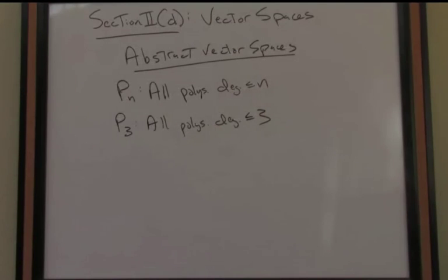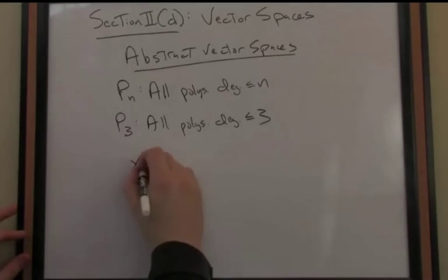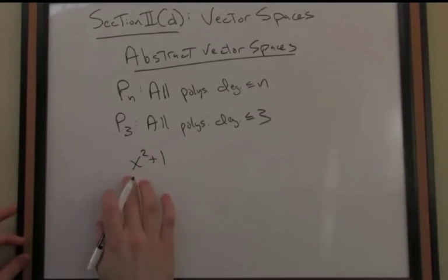The vectors, the elements in this space, are themselves polynomials. And our scalar set, by the way, is still going to be the reals.